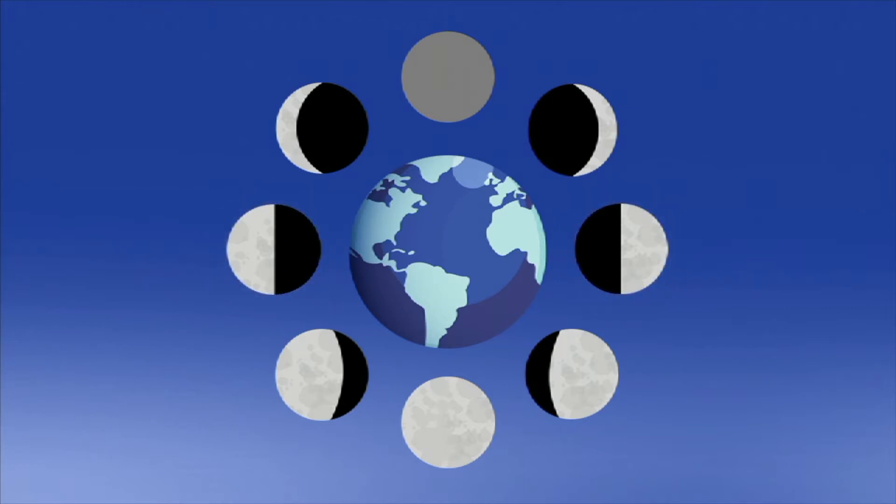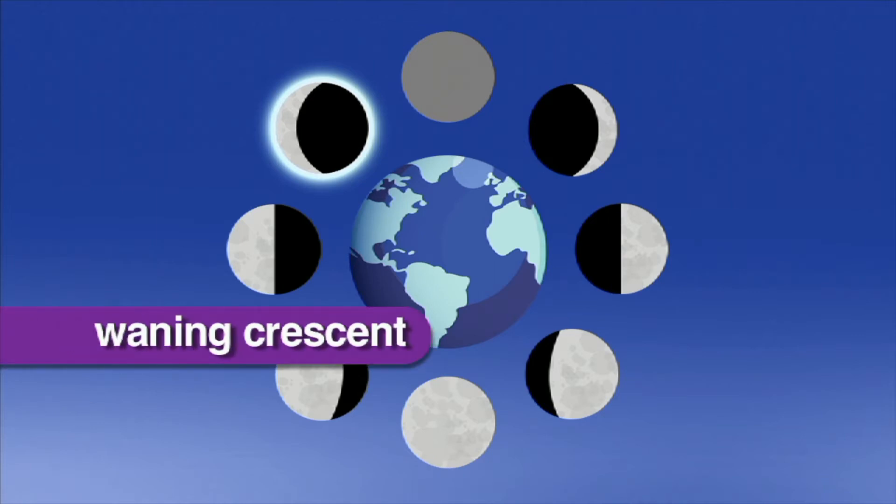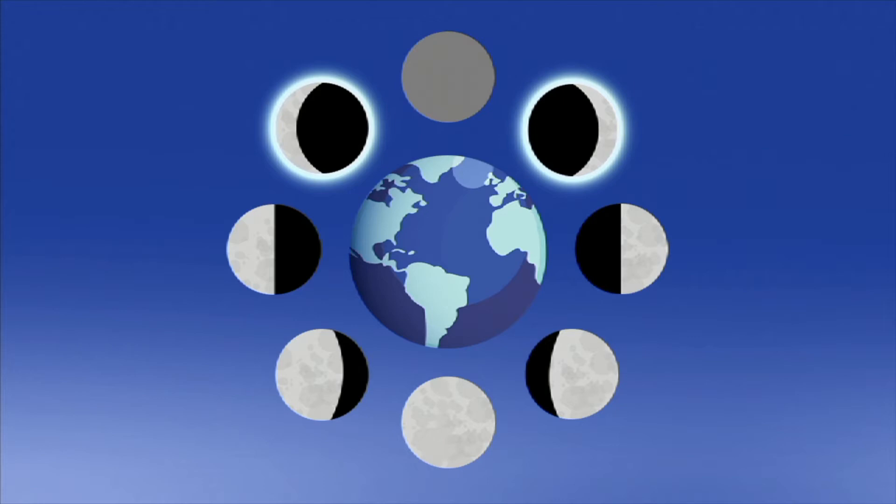The next phase is called waning crescent. Again, this phase looks very much like waxing crescent, except it's getting smaller to us on Earth.